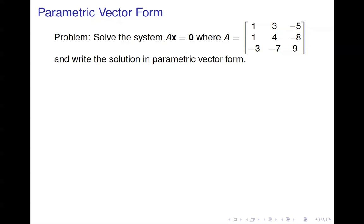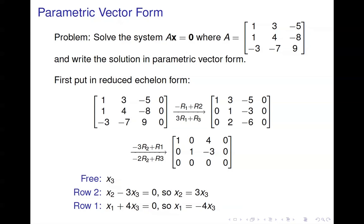We're going to look at a system here and solve it, and we're going to write our solution in parametric vector form — that's something new in this section. We want to solve AX equals zero, so we put it in an augmented matrix, tack on the column of zeros, and do row operations. Notice that I've put my augmented matrix in reduced echelon form, not just echelon form. That makes it easier to write the solution in both general form and parametric vector form. Anytime your system has an infinite number of solutions, it tends to be easier to write out the solution set using reduced echelon form.